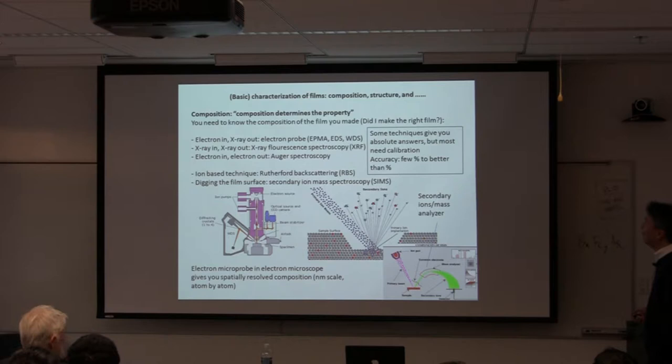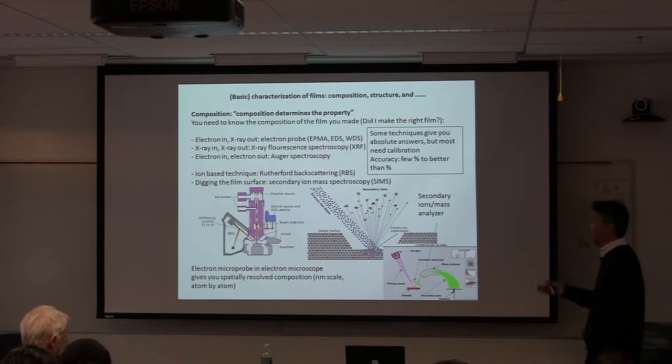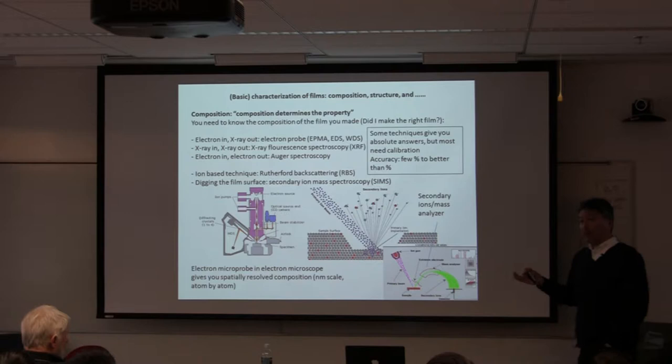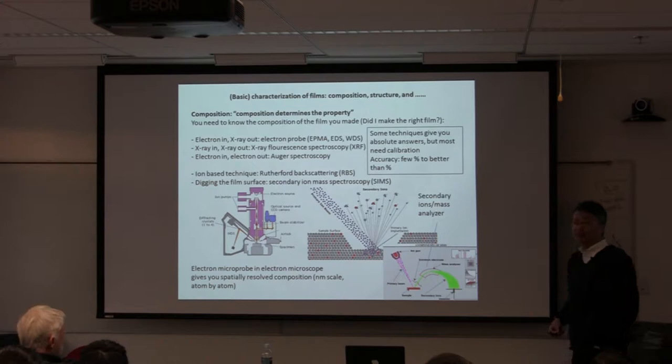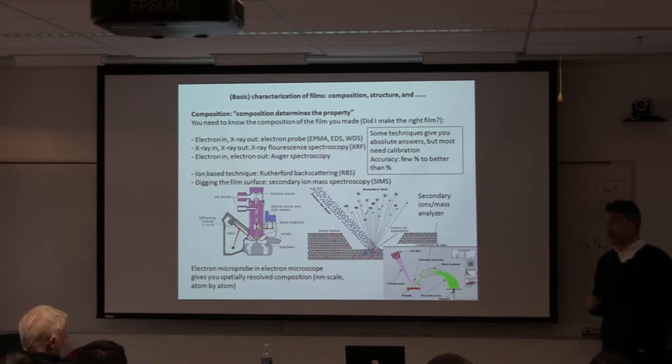For basic characterization, you need to confirm what you made. Determining the composition of the film is really important — even with PLD and its non-equilibrium stoichiometric transfer, you still need to check. There are many techniques: electron in / light out, light in / electron out. The most common one we use is EPMA (electron probe microanalysis). Many of these techniques are built into electron microscopes, allowing spatially resolved compositional mapping. RBS gives absolute composition values by fitting; most others require accurate calibration.